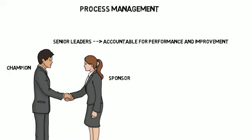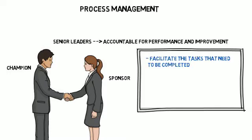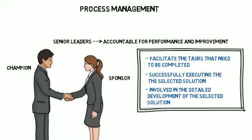For each belt or team lead, their role in this phase is primarily to facilitate the tasks that need to be completed. The process owners and managers are key to successfully executing the selected solution. Process owners should be involved in the detailed development of the selected solution.